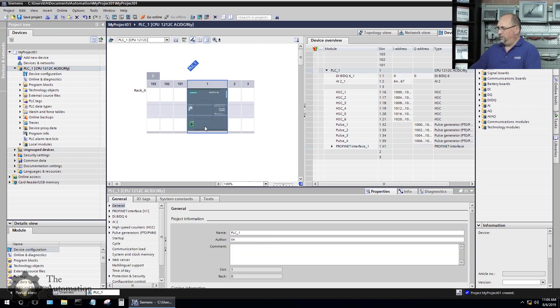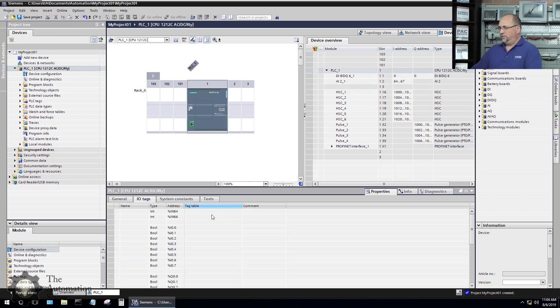Next thing I want to do is I'm going to select the base unit here and put in some IO tags. And we're not going to put a lot of thought into this. We're going to keep it very simple. So the first input here, input 0, is going to be my stop PB. And the second input, input 1, is my start PB. And then input number 5, we'll just call this our M1 Ux contact.